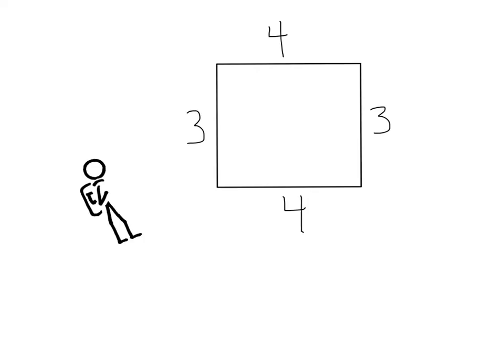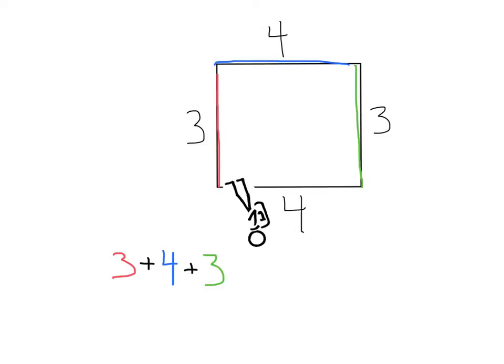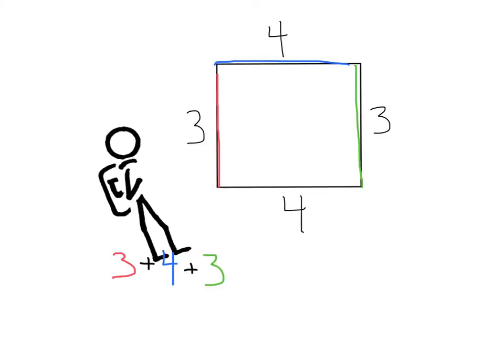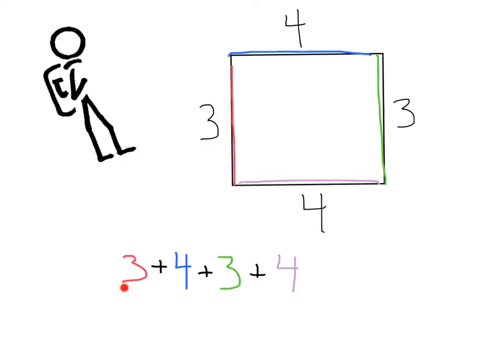Let's find the perimeter of this rectangle. First, this side here, that's three. Keep walking, this side is four. Here we're going to get another three. And lastly, another four. Now if we add all those side lengths up, three plus four plus three plus four, that gives us a perimeter of 14 units.